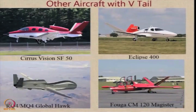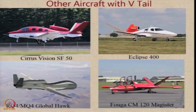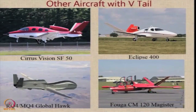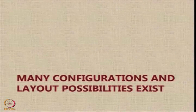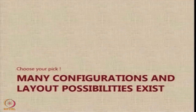Other aircraft with a butterfly tail include the Global Hawk and a few others. The Sirius Vision SF-50 and Eclipse 400 wanted to nestle one engine on the top of the fuselage, and by providing a butterfly tail, they clear the tail from the hot exhaust of the jet engine. In short, we have many configurational possibilities and layout options available for a designer. You have to make a choice based on your own requirements and vision of what is most suitable. Thank you very much.